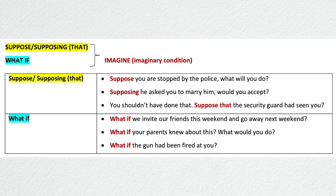In sentences about the past, past perfect tense is used to talk about situations that didn't occur. For example: 'You shouldn't have done that. Suppose that the security guard had seen you,' or 'What if the gun had been fired at you?' These expressions can also be used to talk about fears.